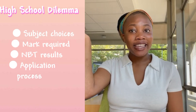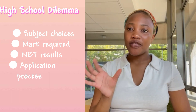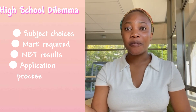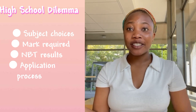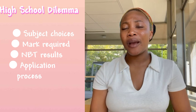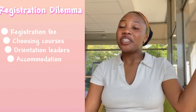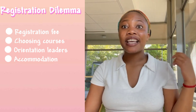Welcome to part one. In part one, we'll divide it into two sections: high school dilemma and registration dilemma. Under high school dilemma, we'll be discussing things like your subject choices, your marks, your grade 11 and grade 12 marks, your NPT results, how to actually apply for computer science, and which faculty you should apply to. Under registration dilemma, we'll be talking about registration fees, orientation leaders, the books you need, and accommodation.